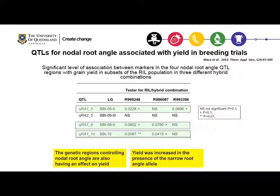This table shows that there is a significant level of association between these markers and yield data collected from dryland breeding trials in three different hybrid combinations. The genetic regions controlling nodal root angle were also having an effect on yield, and yield would increase in the presence of the narrow root angle allele.